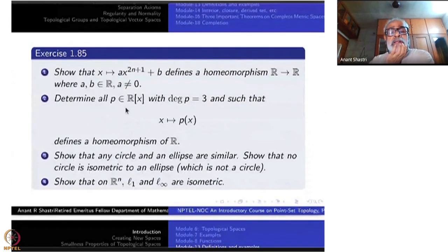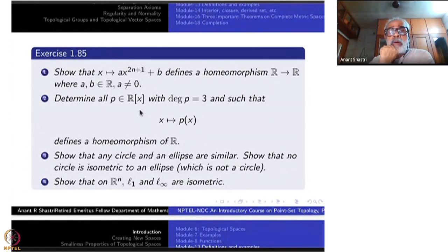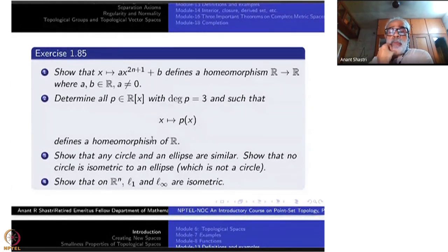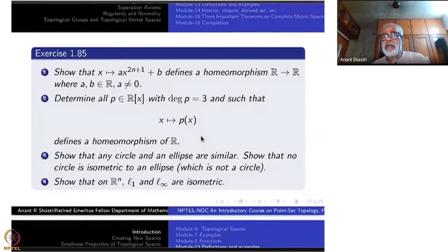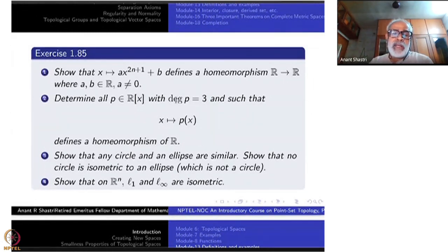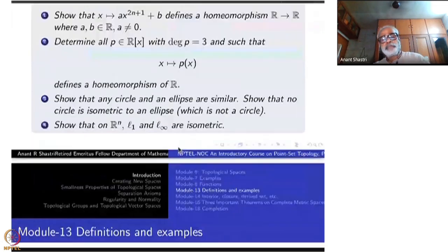One exercise: take a polynomial p(x) of degree three in one variable with real coefficients and evaluate it at each x to get a map from R to R. Show that it is a homeomorphism from R to R. The hint is: it must be continuous, onto, and strictly monotonically increasing — that is enough.